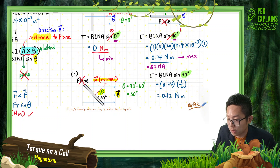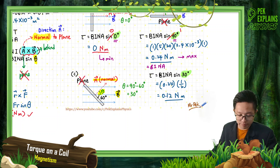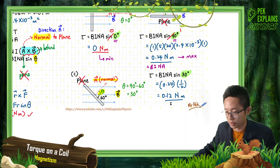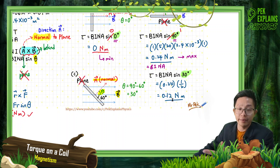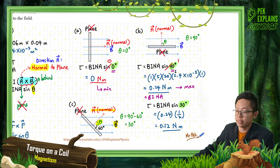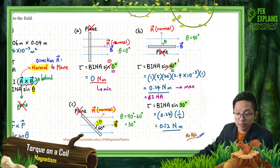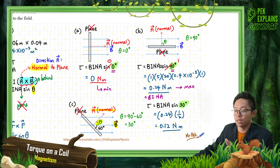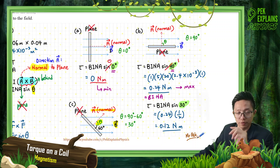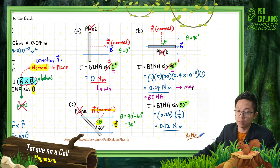That's the torque for all three cases. Be careful with the angle — the angle theta is always between the normal to the plane and the magnetic field, not between the plane itself and the magnetic field. That's it for this part. See you in the next video.